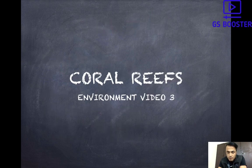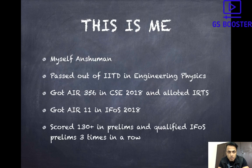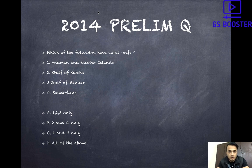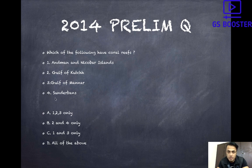Coming directly to the topic of coral reefs — this particular topic has come twice in prelims and last year it also came in mains GS Paper 1 on coral reefs. So this topic is very important from both prelims and mains point of view. There was a question in 2014 prelims: which of the following regions have coral reefs? The options were Andaman and Nicobar Islands, Gulf of Kutch, Gulf of Mannar, and Sundarbans. The right answer is one, two, and three. We will understand why Sundarbans doesn't have coral reefs after covering the full video.